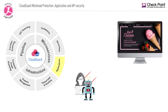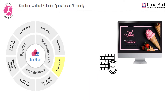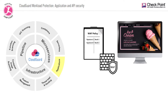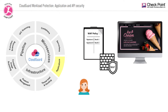Traditionally, you would use a legacy web application firewall to defend against these kinds of attacks. These WAFs are rule-based and use binary rules to match requests to attack signature databases. This creates enormous administrative overhead and blocks legitimate application users, or as we like to call it, false positives.